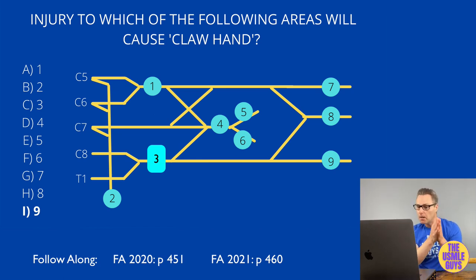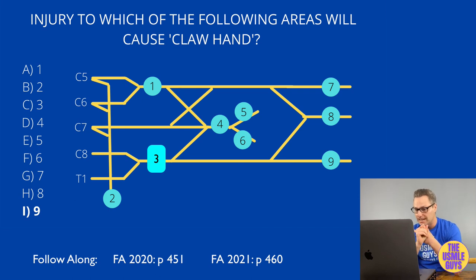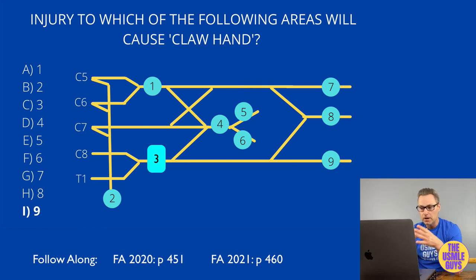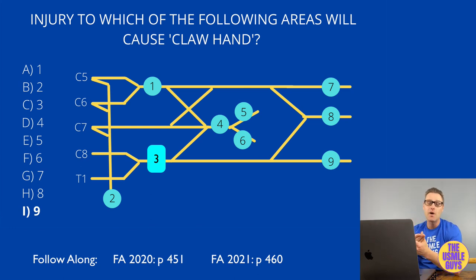An injury to the distal ulnar branch can also cause claw hand due to injury to the intrinsic muscles of the hand. In the ulnar claw, extension of the middle and index fingers is seen with flexion of the little and ring fingers; whereas in the median claw, you see flexion of the index and middle fingers with extension of the ring and little fingers. This unique claw is seen both with the patient trying to extend the fingers and at rest.